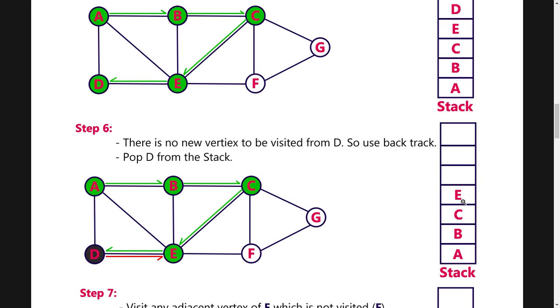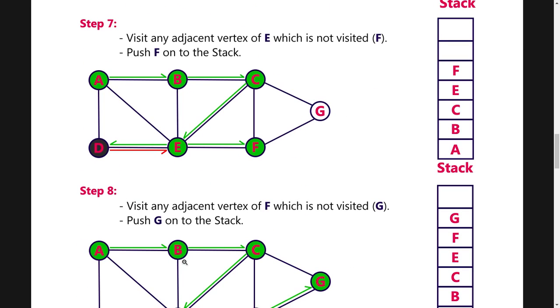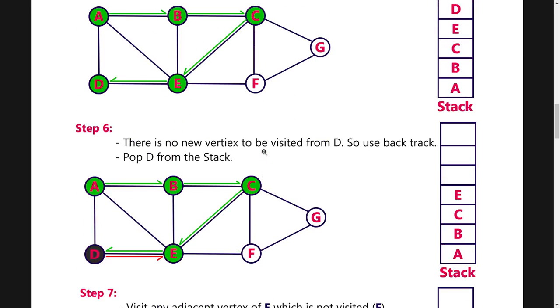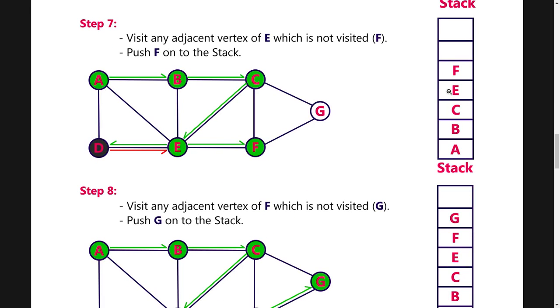Next, there is node E. You have to come to E. So once you come to E, F is the unvisited node. So you have to push F into the stack and mark it as visited.